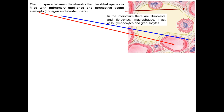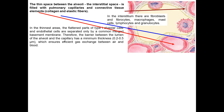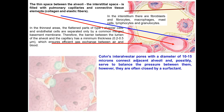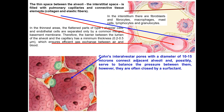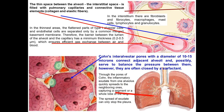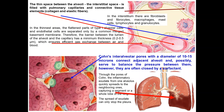The thin space between the alveoli is called the interstitial tissue; it is filled with pulmonary capillaries and connective tissue. This tissue contains fibroblasts, fibrocytes, macrophages, smooth muscle cells, lymphocytes, and granulocytes. In the thinnest area, the flat part of type 1 alveolar cells and endothelial cells are separated only by a common basement membrane. Therefore the barrier between the lumen of alveoli and the capillary has minimum thickness, ensuring efficient gas exchange. You should also remember the intra-alveolar pores with a diameter of 10 to 15 microns, which connect neighboring alveoli.